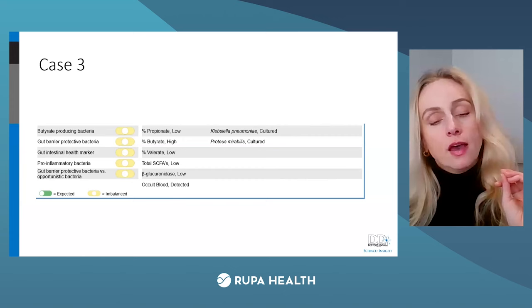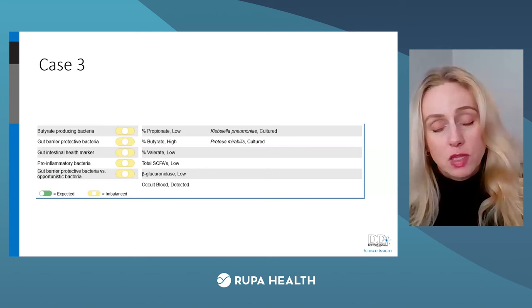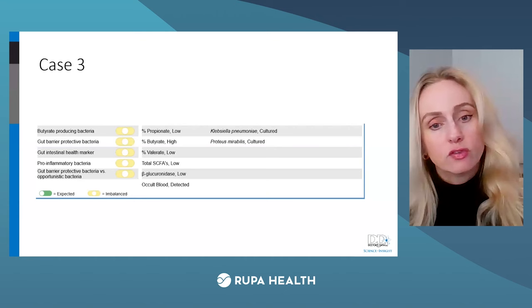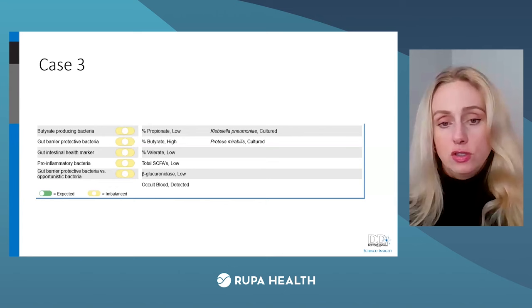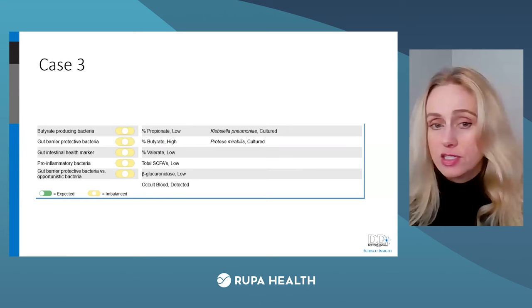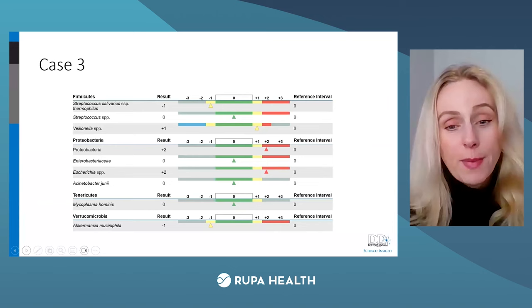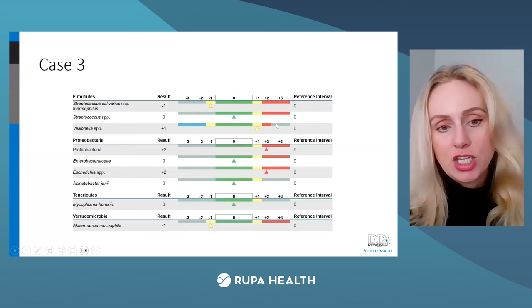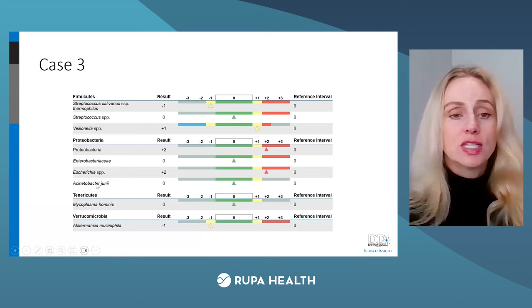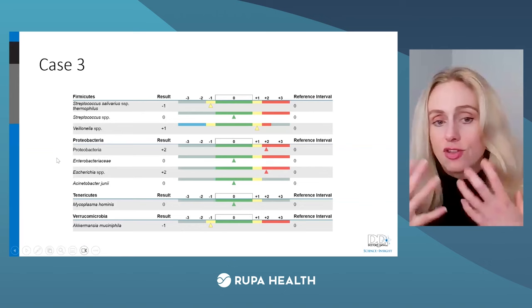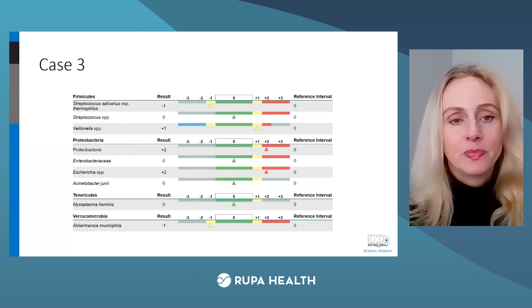There is occult blood here. Occult blood on GI 360 denotes hemolyzed blood — so upper GI bleeding. In people on a ketogenic or carnivore diet, occult blood can be a byproduct of the diet. You could rerun this in four weeks to be sure there isn't an ulcer or esophageal varices. There are also Klebsiella and Proteus cultured. Within the Verrucomicrobia phyla, Akkermansia is too low — polyphenols are needed. The Proteobacteria and Escherichia are too high — inflammatory bacteria that thrive on excess fats and proteins. The bacteria that like polyphenols are depleted — diet-induced dysbiosis.